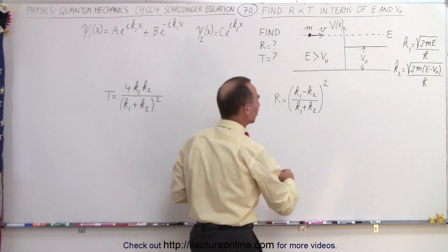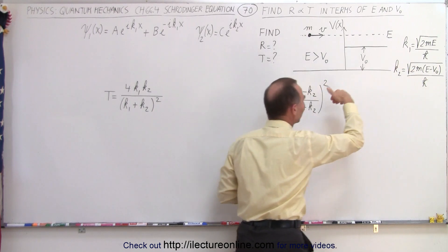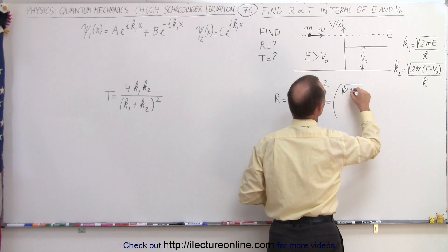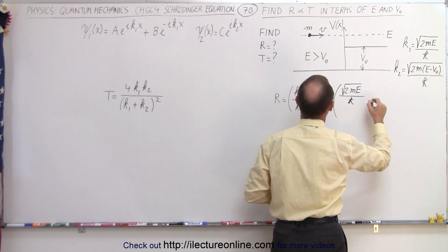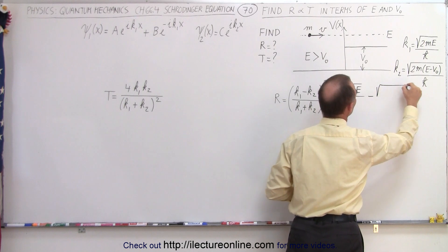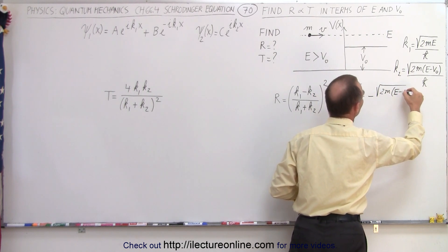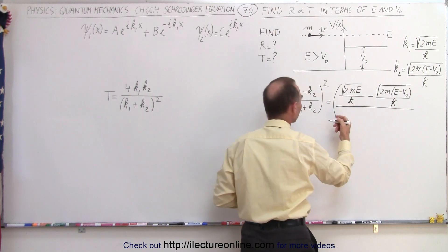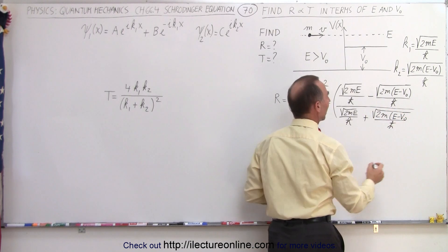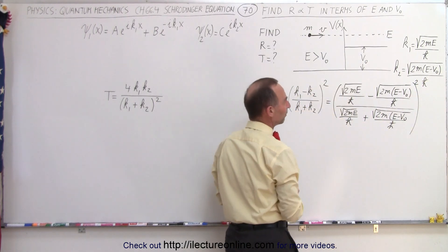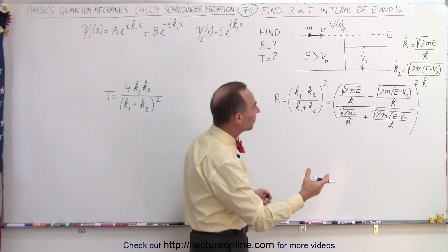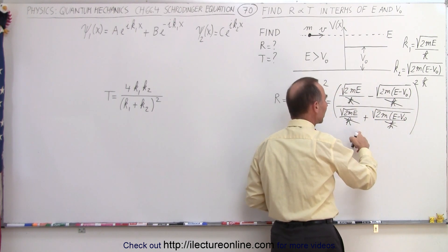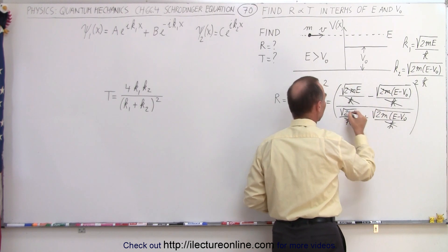Let's start with the reflection coefficient. Knowing that K1 equals the square root of 2mE divided by h-bar, and K2 equals the square root of 2m(E − V₀) divided by h-bar, let's substitute those into the equation. This becomes the square root of 2mE minus the square root of 2m(E − V₀), all divided by h-bar, over the sum of the two, with the whole thing squared. Right away we can see that h-bar cancels in the numerator and denominator, and we can also divide both by the square root of 2m, so that cancels out everywhere as well.